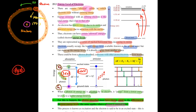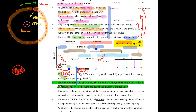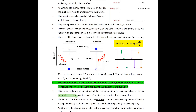When your electron absorbs energy and jumps to a higher energy level, this process is known as excitation, and your electron is said to be in an excited state. That particular state usually does not last — it is an unstable condition and the electron will eventually return to a lower energy level. When it returns, the electron falls back from E2 to E1 and re-emits a photon, where the photon energy ΔE equals the energy level difference.